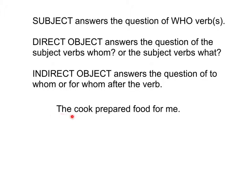The cook prepared food for me. Can we find the subject of the sentence? Who is preparing the food? The cook is — so that is the subject. Let's look at the word food. What does the cook prepare? The cook prepares the food. So, we know that is our direct object.